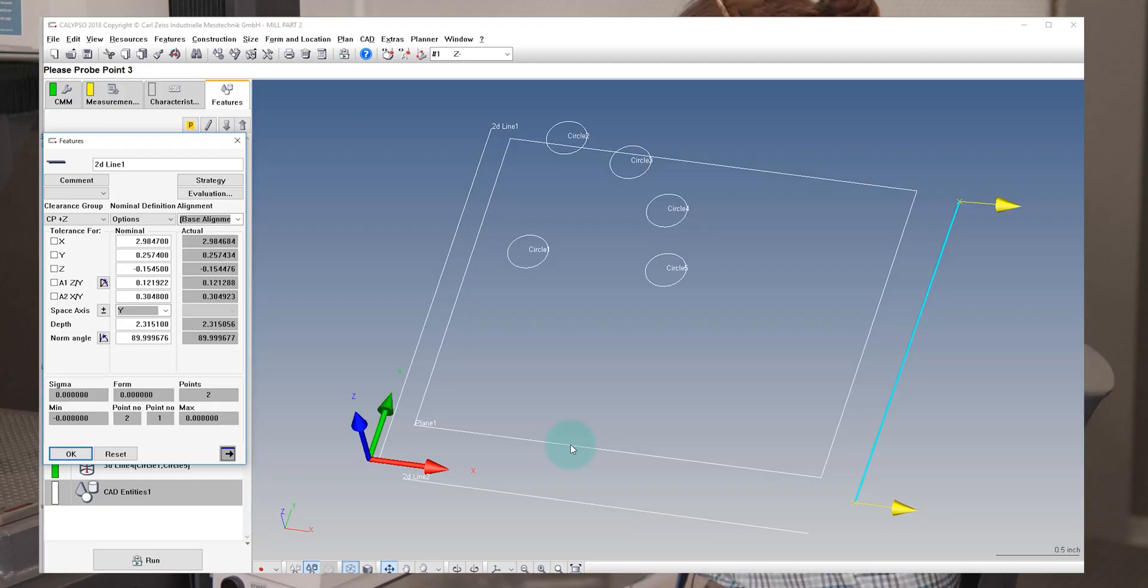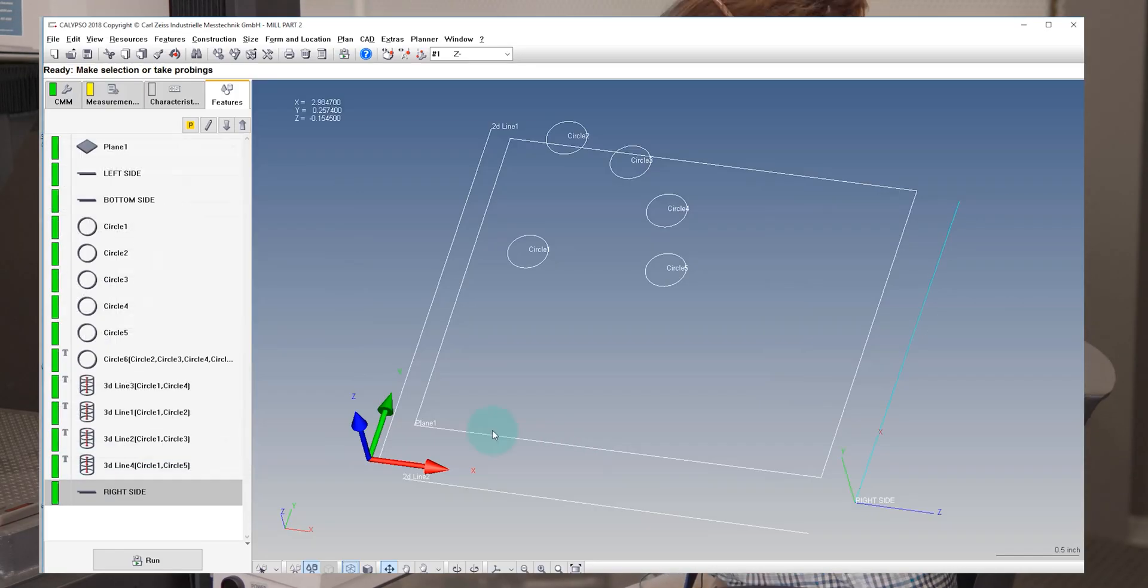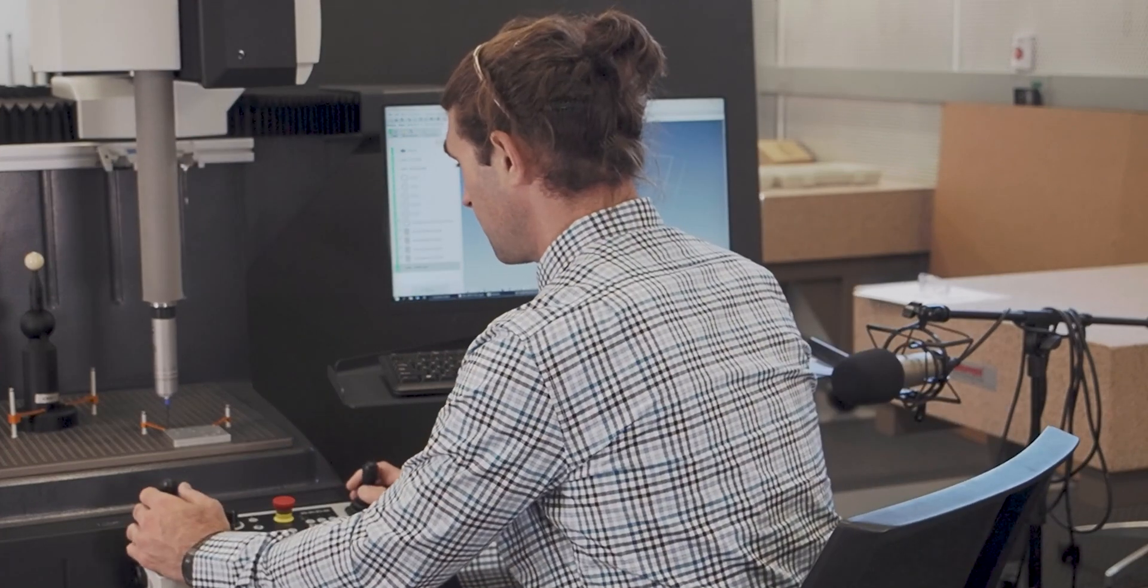So the one on the right side, I'm going to name right side. It makes sense to me. And then I'm going to go ahead and go to the top of the part, take a 2D line and call that top side. So we've got our two 2D lines in pretty good shape.